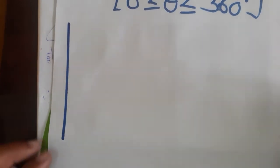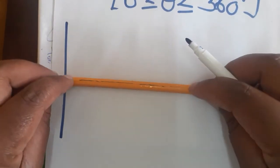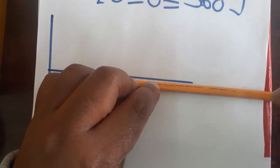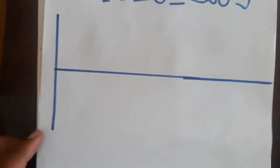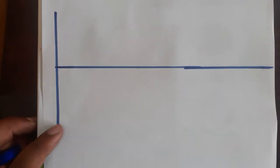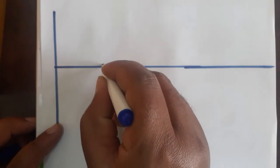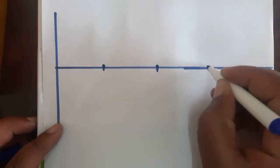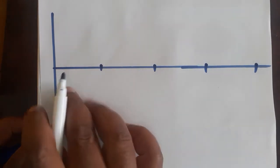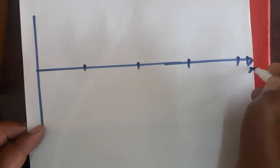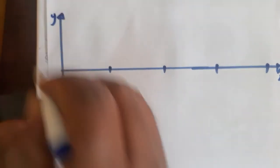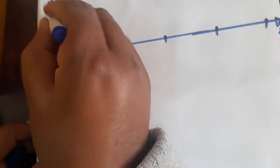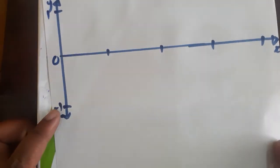I hope it is okay. I can draw the x-axis here. We are going to have 270 and 360. Take note the distance here should be the same. This is x, this is y, so we have negative one to one on the y-axis.